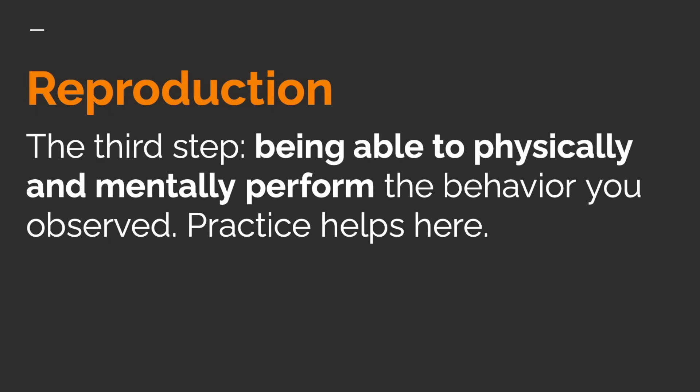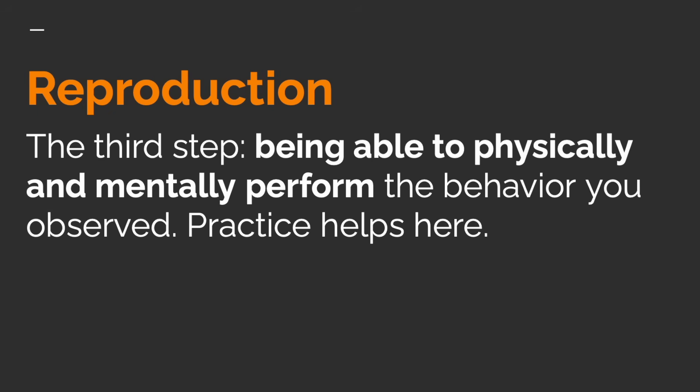Reproduction is the third step — being able to physically and mentally perform the behavior you observed. Practice helps here. And motivation is the fourth step in observational learning. You need a reason to imitate the behavior, usually some form of expected reward or benefit.